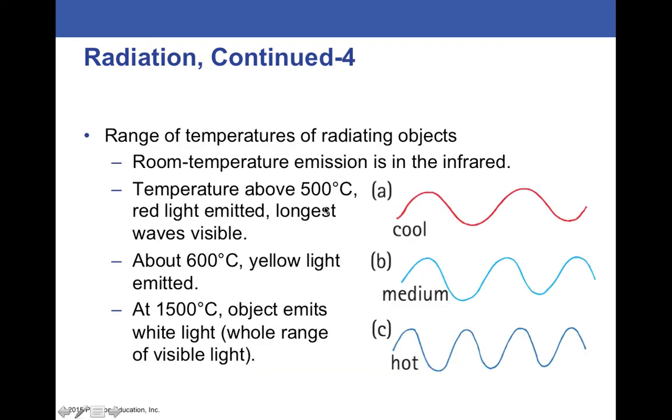So, anything above 500 degrees Celsius, you get some deep red light. 600, you get some yellow light emitted, and about 1500 Celsius, an object emits white light.